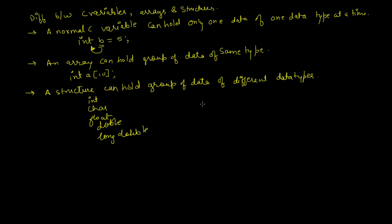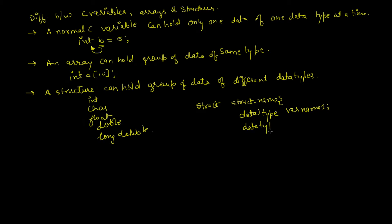Now let's look at the basic syntax to declare a structure. You write struct followed by the struct name, then data type and variable name pairs for each member. To initialize a variable of this structure type, you write struct name followed by a variable name, for example a. This variable a will be of type structure.